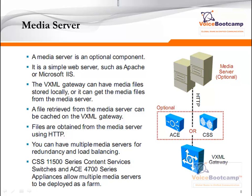The media server is basically a web server — it can be as simple as Microsoft IIS or Apache. The VXML gateway can have media files stored locally, or they can be stored on a media server. Storing files locally on flash is fine, but you are limited by flash size. On a media server, the router is configured to pull media files from the external web server on demand. The router will retrieve and cache the file on the VXML gateway for a certain amount of time. You can have multiple media servers for redundancy and load balancing, and to achieve load balancing you can use the CSS 11000 or ACE series.